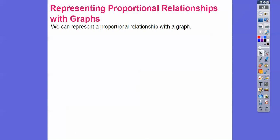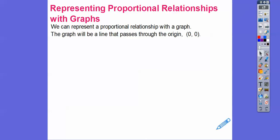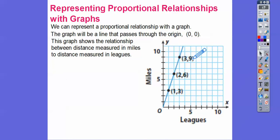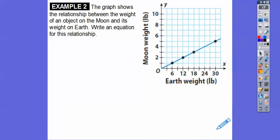We can represent proportional relationships with a graph. As long as it's a proportional relationship, the graph will always be a line that goes through the origin. Here's a graph showing the relationship between distance in miles and distance in leagues. One league is three miles, two leagues is six miles, three leagues is nine miles. Zero leagues represents zero miles — it passes through the origin.